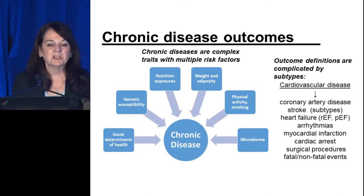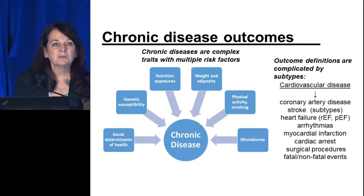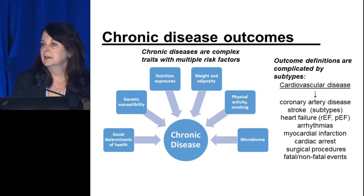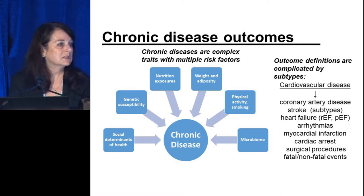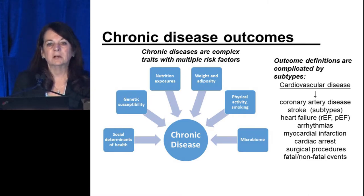Chronic diseases are very complex traits with multiple risk factors. There are nutrition exposures, but also weight and adiposity, lifestyle factors such as physical activity, smoking, sedentary behaviors, the microbiome, genetic susceptibility or family history, social determinants of health, and many other factors. So chronic diseases really have a multifactorial pathway.